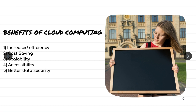The fourth point is accessibility. Cloud-based systems can be accessed from anywhere with an internet connection, making it easier for students and staff to work remotely. Better data security — cloud-based systems often provide better security features such as encryption and backups than on-premises systems.